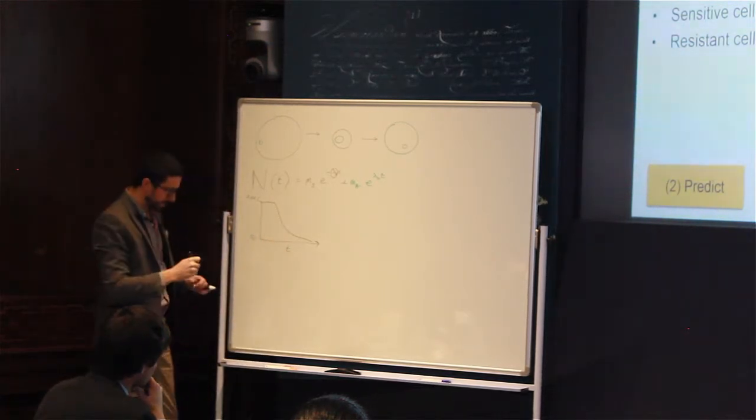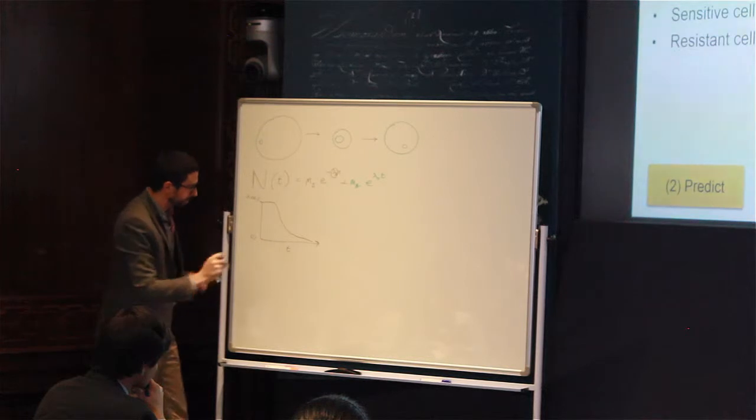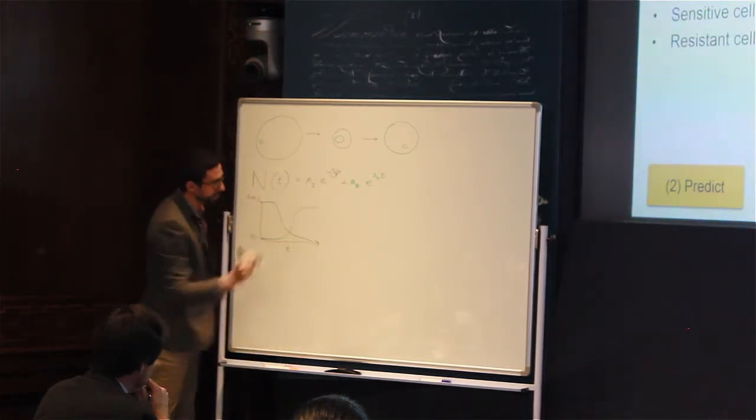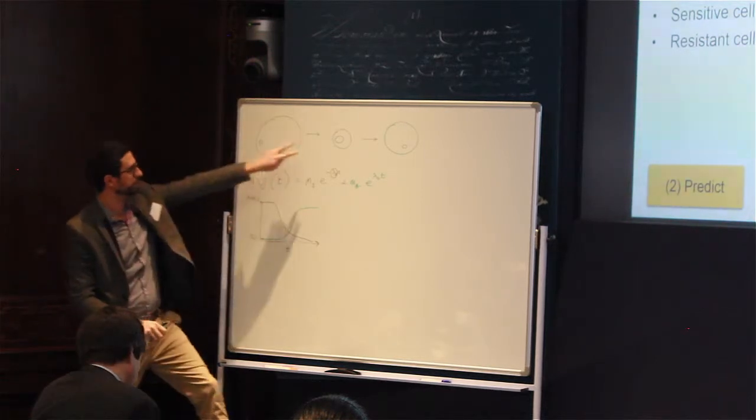And at the same time, the resistant population, which is almost undetectable at the beginning, grows and becomes dominant. This models this process over here.